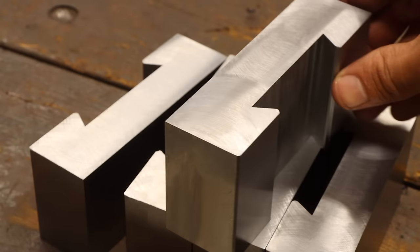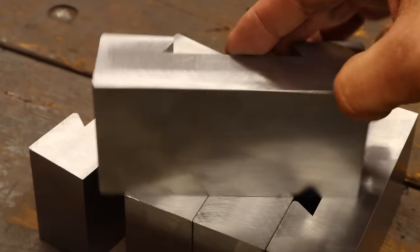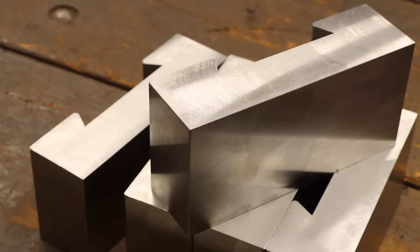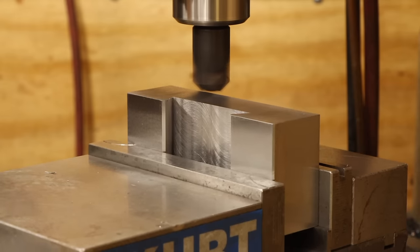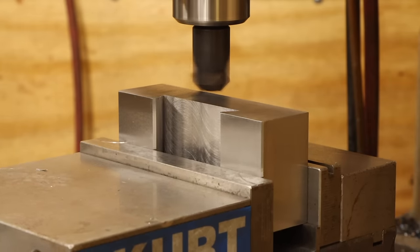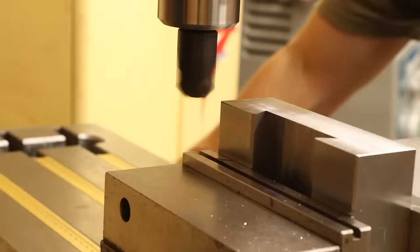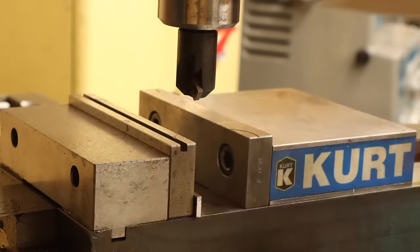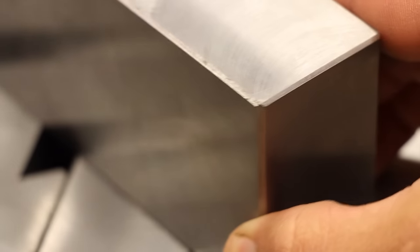For one, I want to chamfer all the outside edges. Of course I could do this with a file, but it would be far more efficient and consistent to run these under a chamfer mill. I'll set up the mill to cut a 25 thou chamfer along the fixed jaw of the vise. Then I can just start working my way through the blocks edge by edge without having to indicate the setup on every part. Doesn't that look nice?